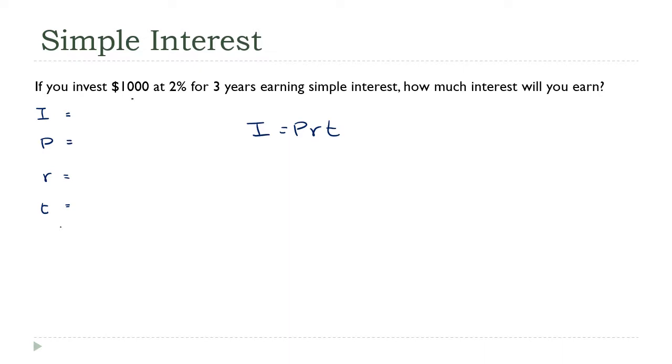So we're going to invest $1,000. That's the principal. 2% is the interest rate. Remember, we need that to be a decimal. T, that's the time. That's three years. And I am looking for the interest. Excellent. That's what I need. I know the value of every variable except for one, so I should be able to calculate that one.